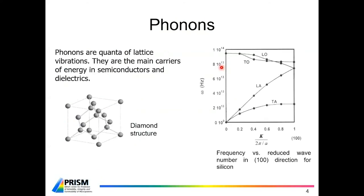So what are phonons? Phonons are quanta of lattice vibrations. If you look at semiconductors and dielectrics, they are in fact the main carriers of energy — energy is transported through lattice vibrations. The description of the lattice vibrations depends strongly on the structure of the underlying crystal structure. Silicon, for example, has a diamond structure, and this leads to vibrational characteristics shown on this dispersion curve — or dispersion relation — where the frequency of vibration is plotted against the dimensionless wave vector. You see that there are a number of different branches: longitudinal optical, transverse optical, longitudinal acoustic, and transverse acoustic.